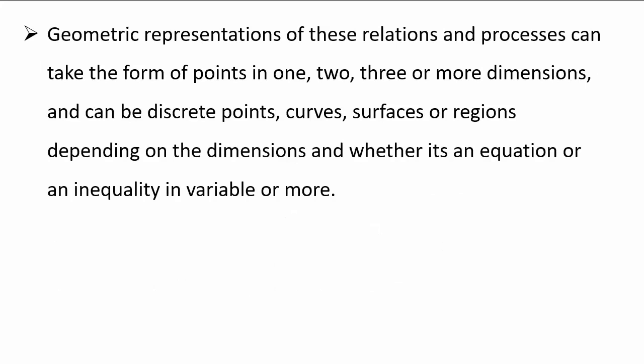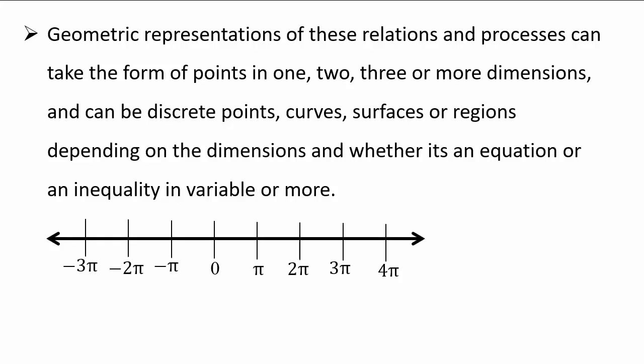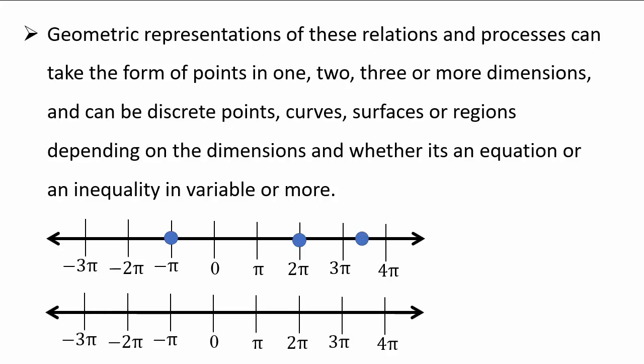Geometric representations of these relations and processes can take the form of points on a number line, like discrete points, or a whole region of a number line — for example, pi and then all the points below pi — which would represent an inequality in one variable.